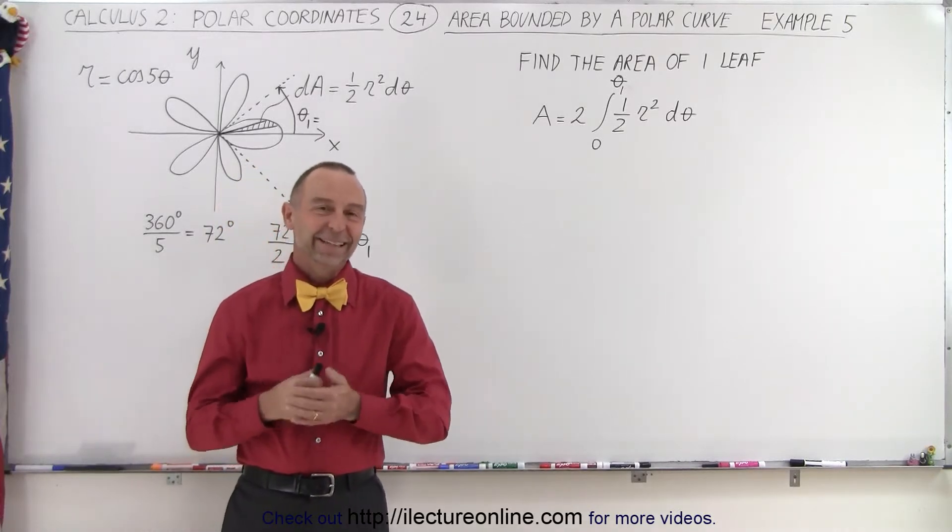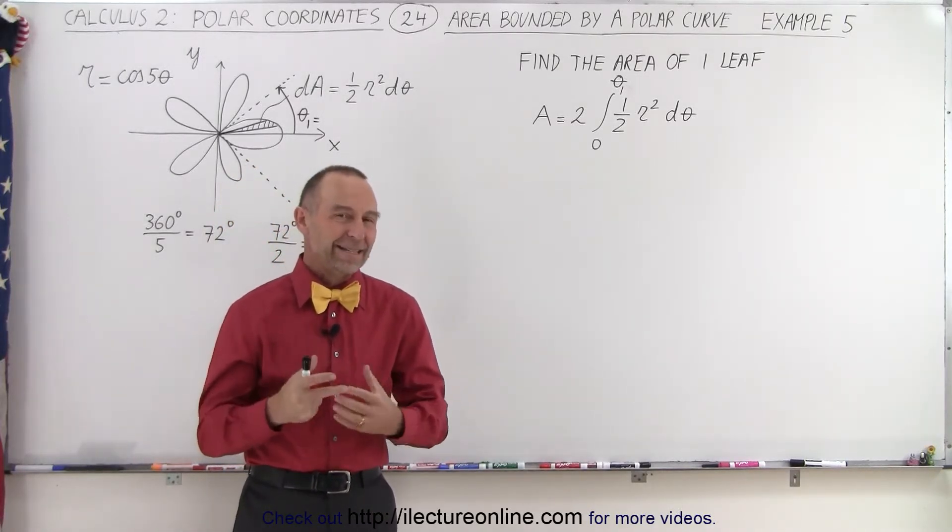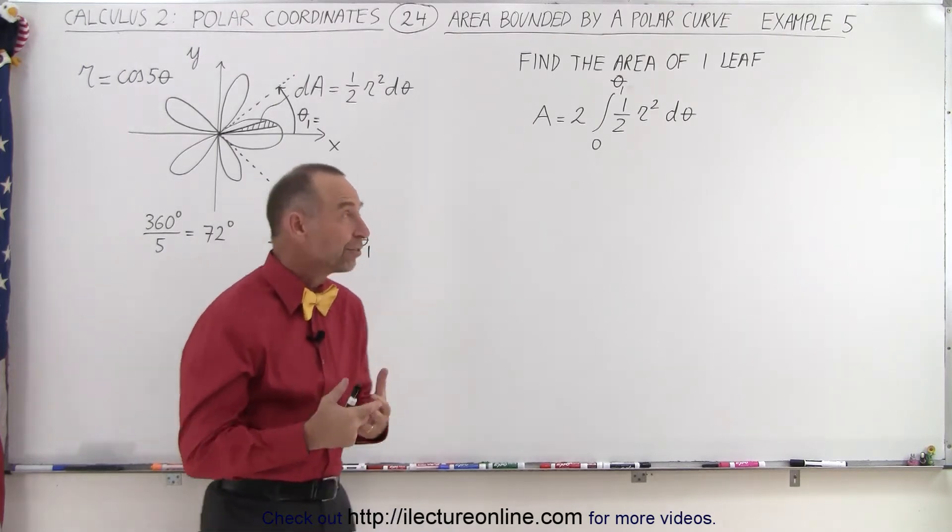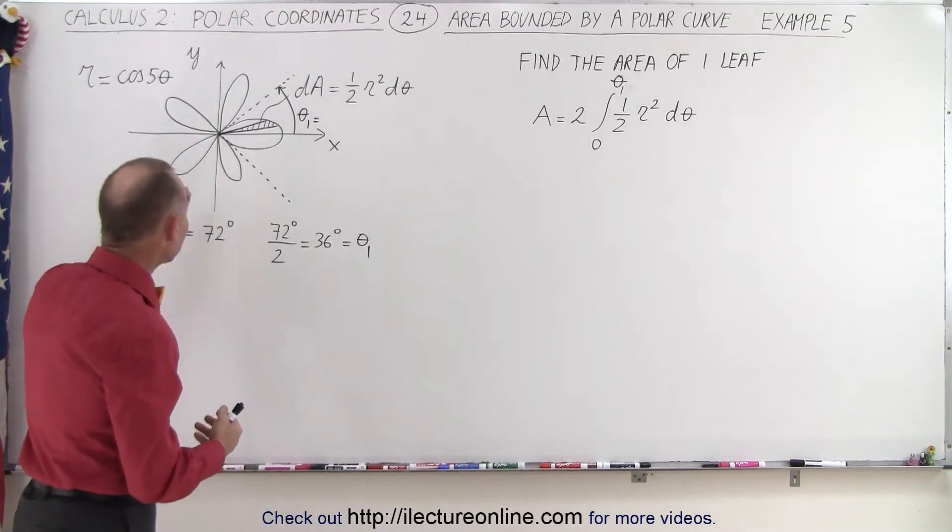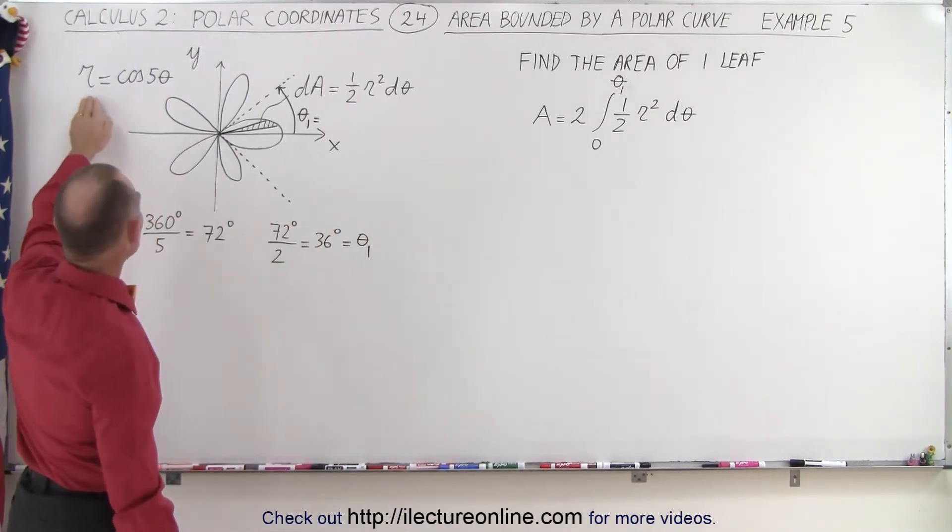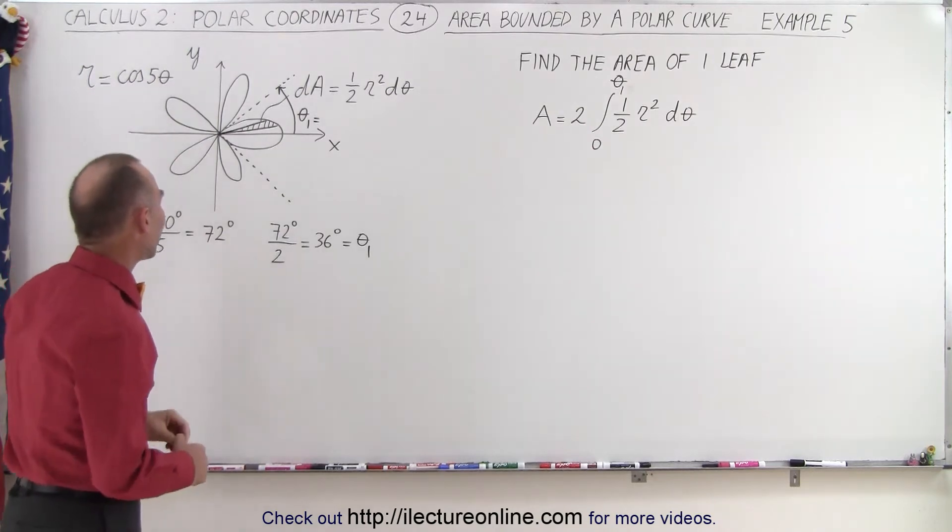Welcome to Electron Line. In this example, we're going to try to find the area of one of the leaves of a rose, in this case a five-leaf rose, defined by equation r equals the cosine of five theta.